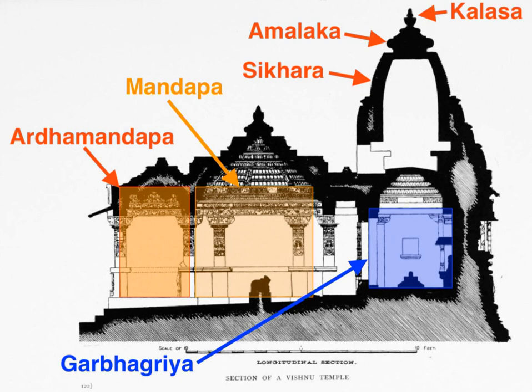Pattadakal is a World Heritage Site where one finds the Virupaksha temple — the biggest temple, with carved scenes from the great epics of the Ramayana and the Mahabharata. Other temples at Pattadakal are Mallikarjuna, Kashivishvanatha, Galaganatha and Papanath.